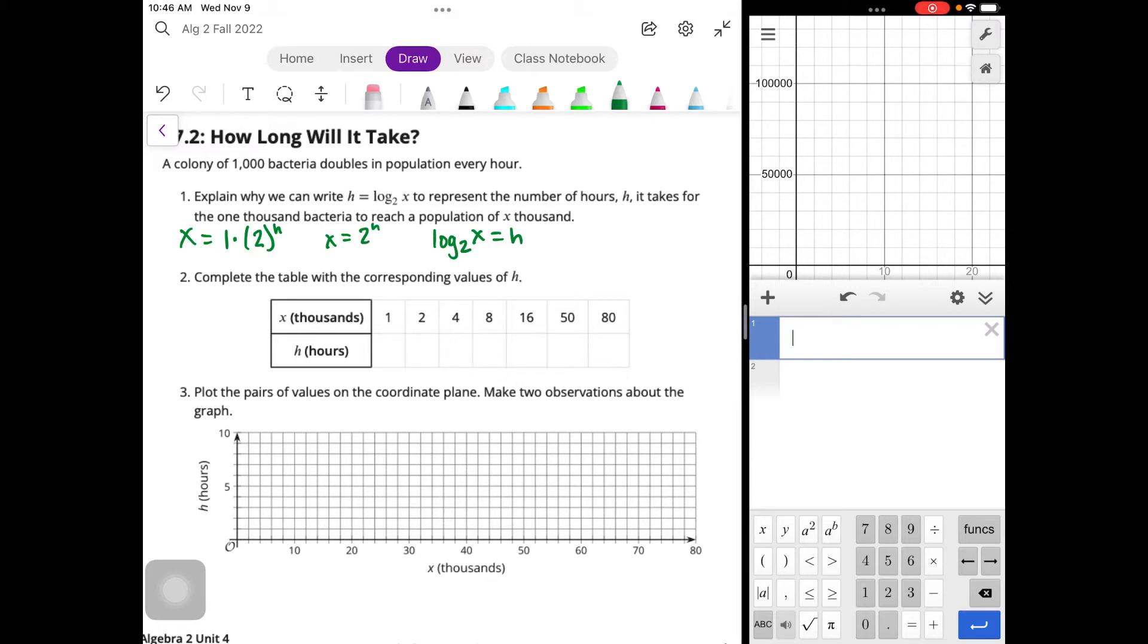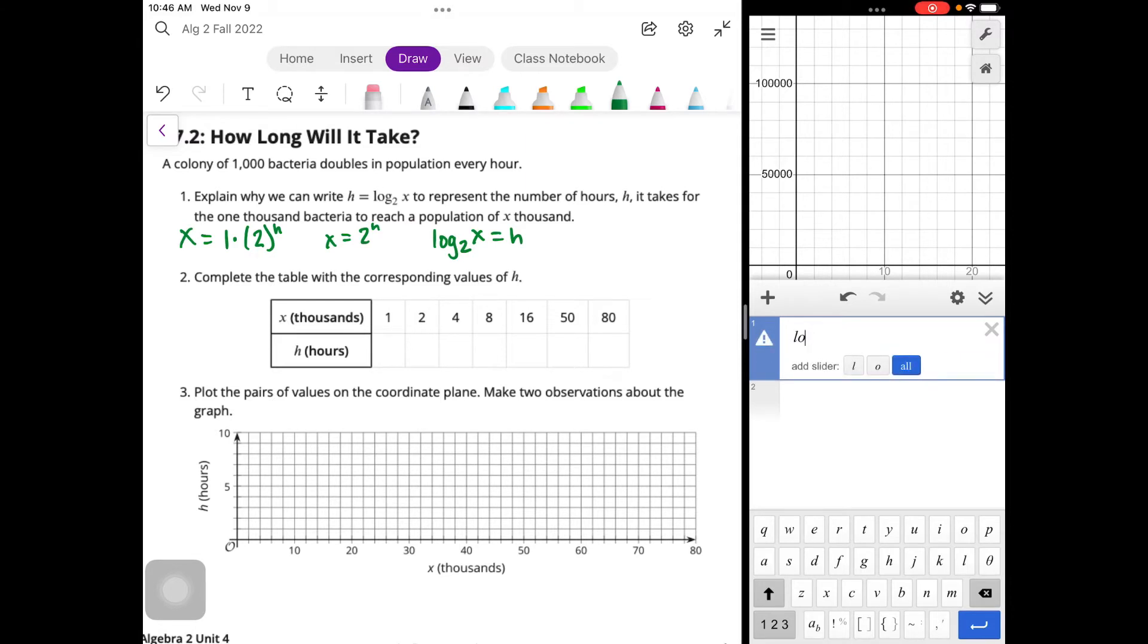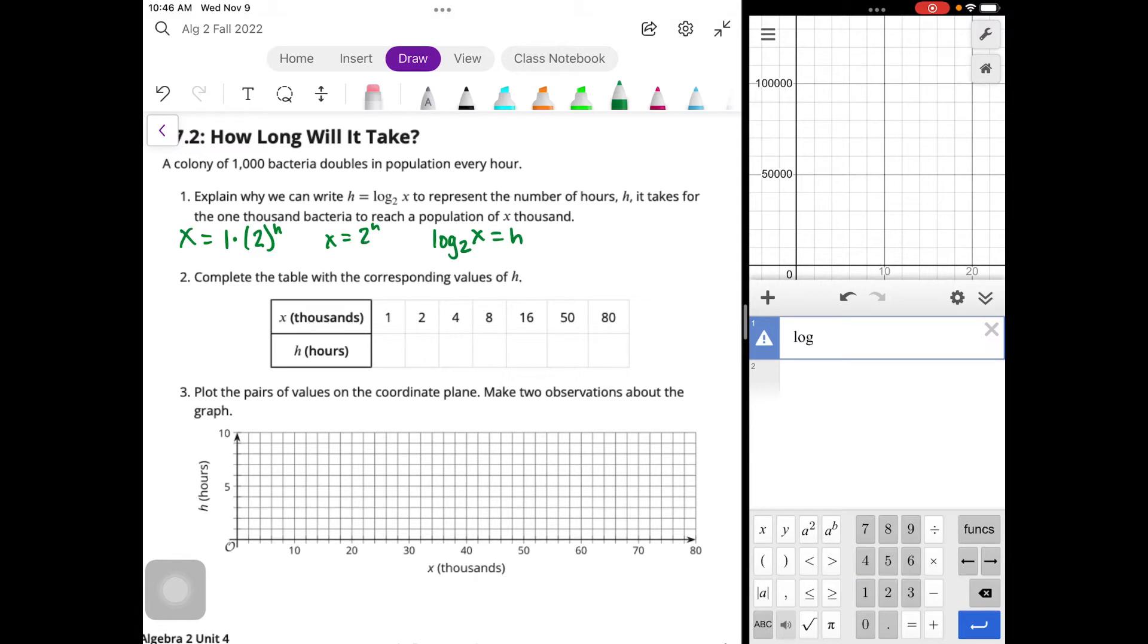All right. So we're going to complete the table with the corresponding values of H. So when we plug in 1, we know we get 2. When we plug in 2, we know we get 4. Oh, wait. We're not plugging in 2. Hold on. So I got those backwards. Sorry about that. All right. So we're plugging it into the log base 2.